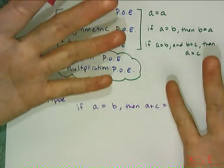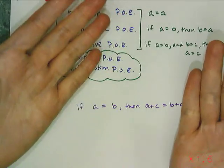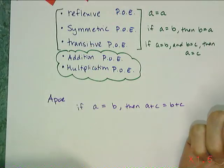So I can add the same quantity to both sides. And it makes sense, it's staying balanced. I'm adding a five to one side, I have to add the five to the other side to maintain the balance of the equal. So that's what APO says.